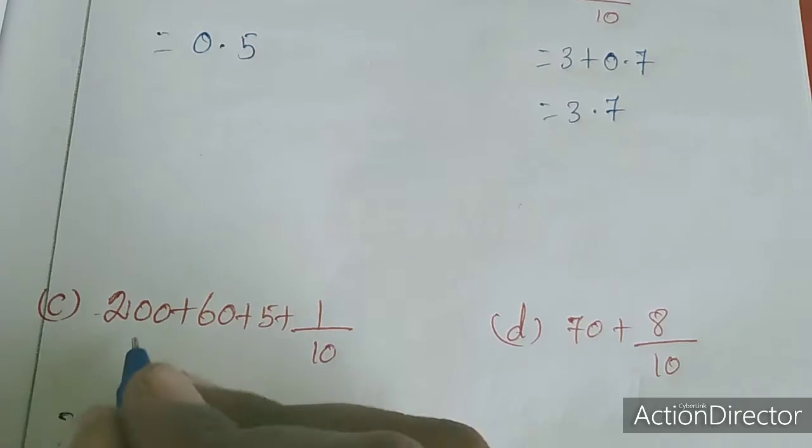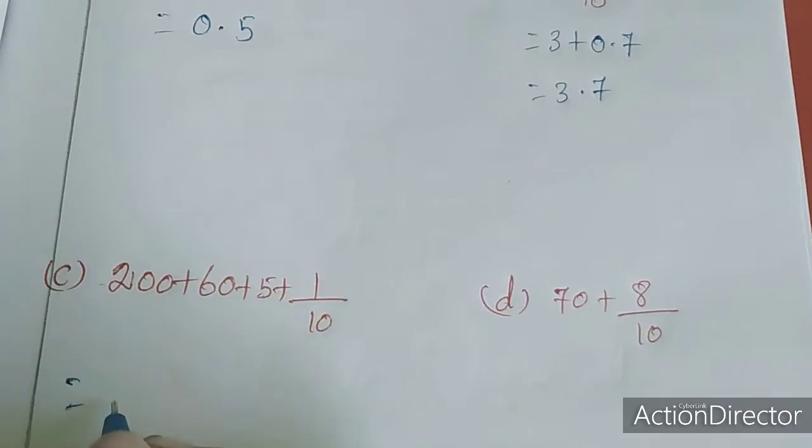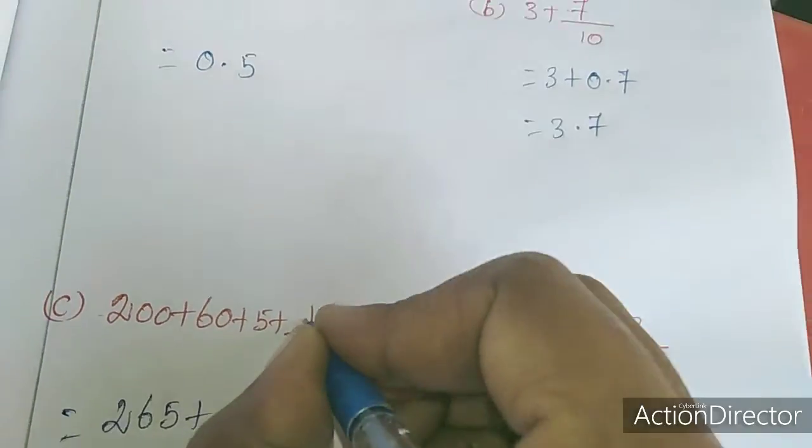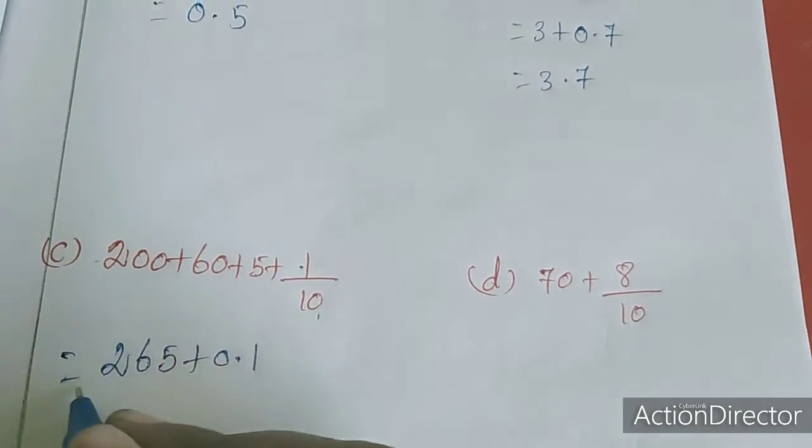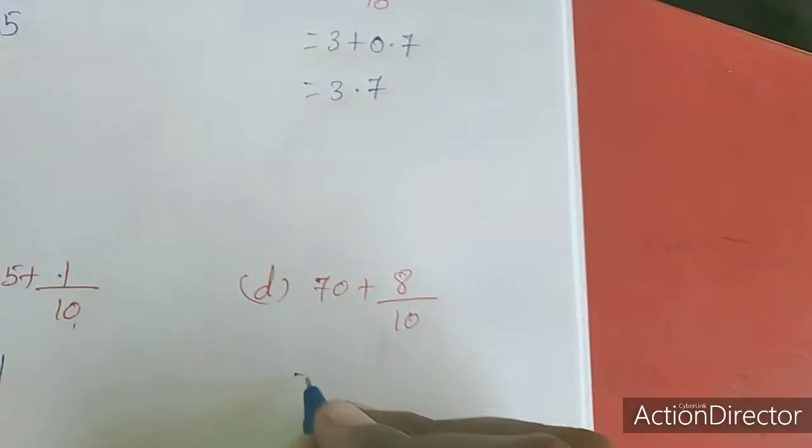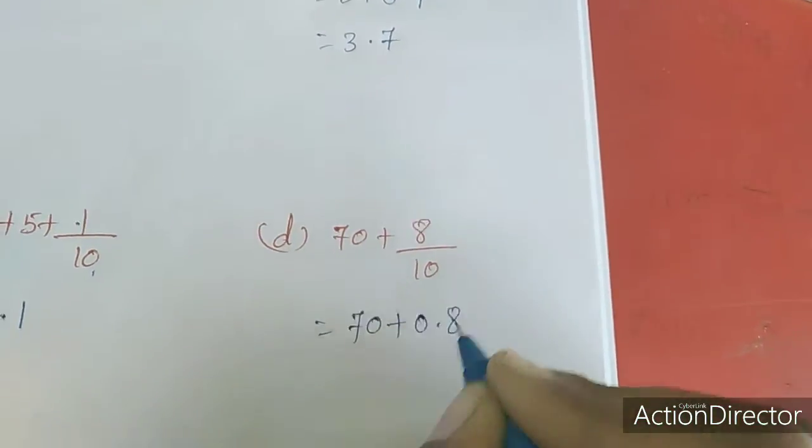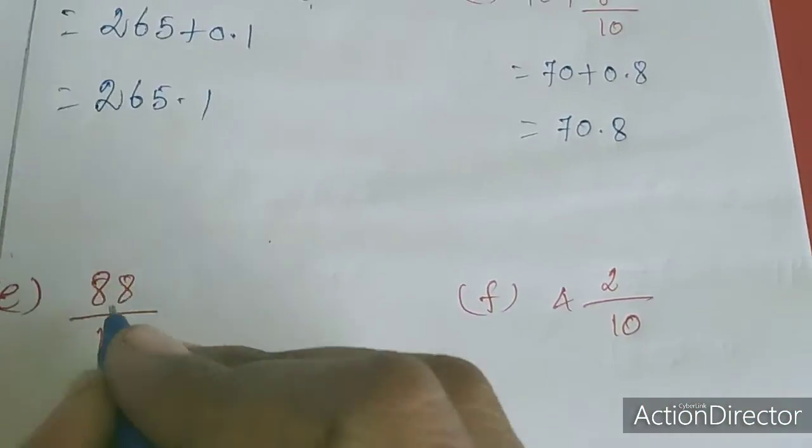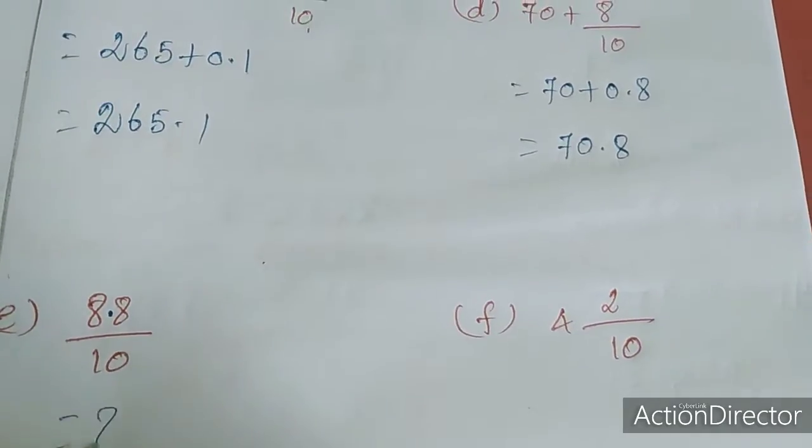Next paharunga, here 200 plus 60 is 260, plus 5 is 265. So 265 plus 1 by 10, dot varamma 0.1. So it is 265.1. Similarly, 70 plus 1 digit kumunna adi dot is 0.8, so add paharunga 70.8.